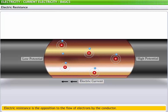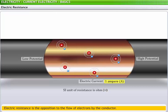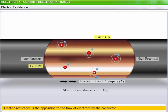Thus, the rate at which charge flows from terminal to terminal is the result of the combined effect of these two quantities. The standard metric unit of resistance is ohm, represented by the Greek letter omega. When one ampere current flows through a conductor across a potential difference of one volt, its resistance is one ohm.